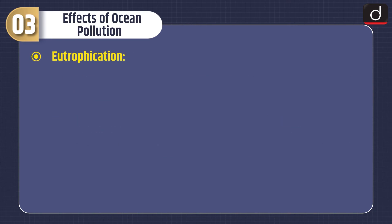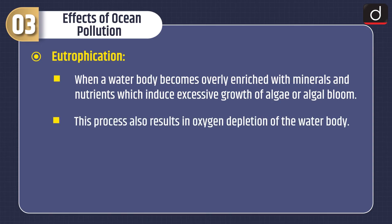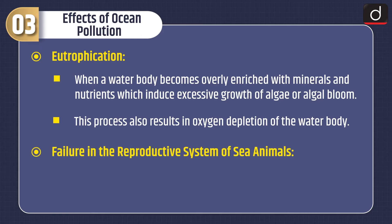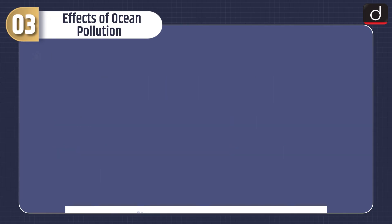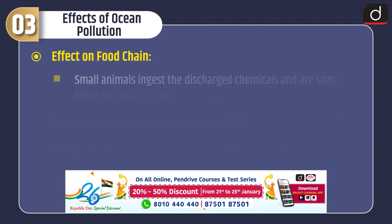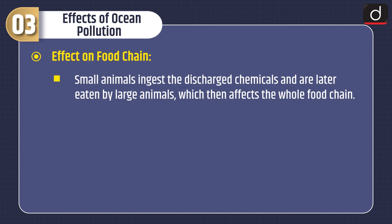Fourth is eutrophication — when a water body becomes overly enriched with minerals and nutrients, inducing excessive growth of algae and algal blooms, which also results in oxygen depletion. Next is failure in the reproductive system of sea animals. Chemicals from pesticides can accumulate in the fatty tissue of animals, leading to reproductive failure. Finally, small animals ingest discharged chemicals and are eaten by large animals, affecting the whole food chain.